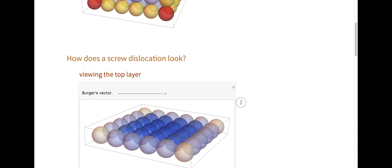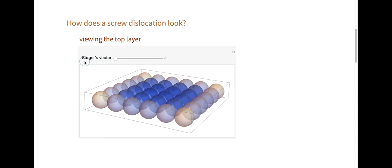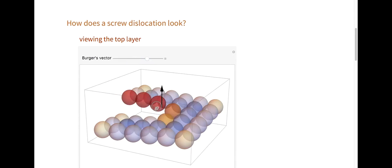To really see how a screw dislocation works, here is an inner layer of the lattice. The Burgers vector represents the magnitude and direction of the lattice distortion resulting from a dislocation. As I increase the magnitude of the Burgers vector, you can really see this kind of spiral staircase shape happening around the dislocation.